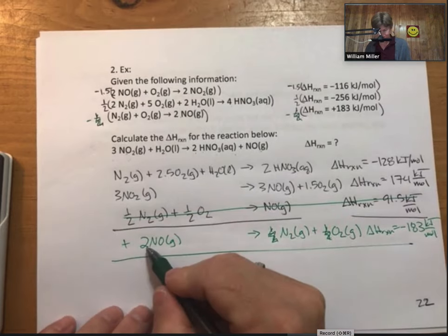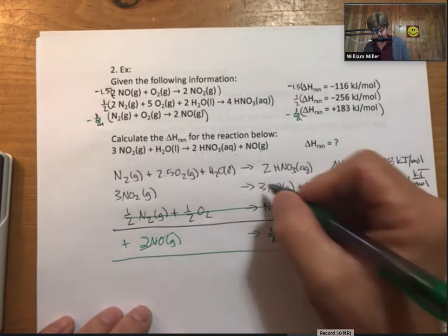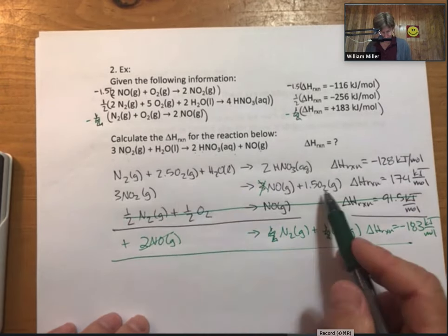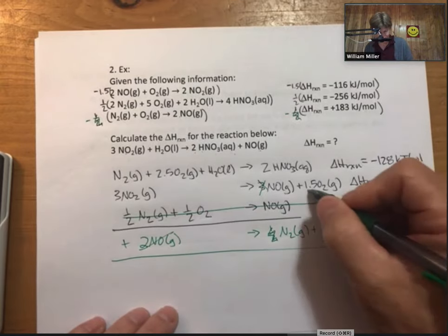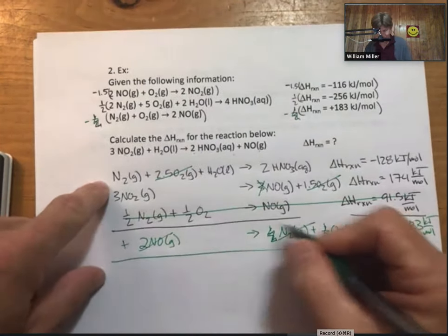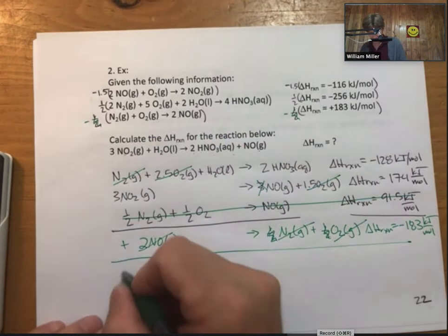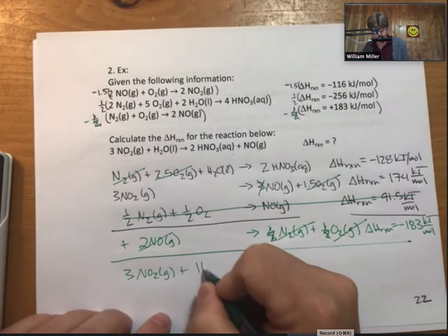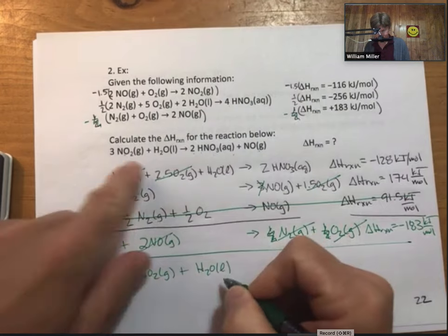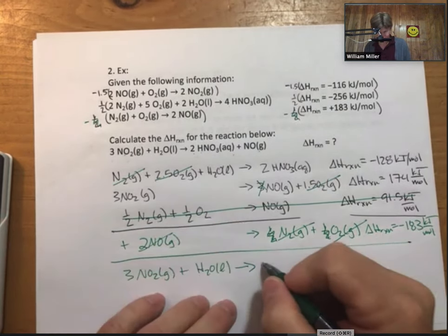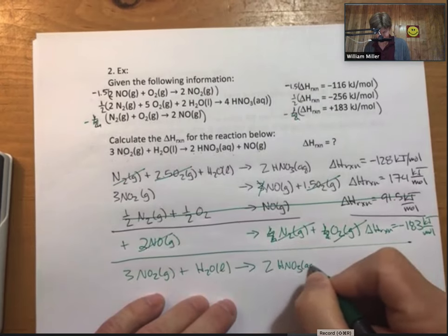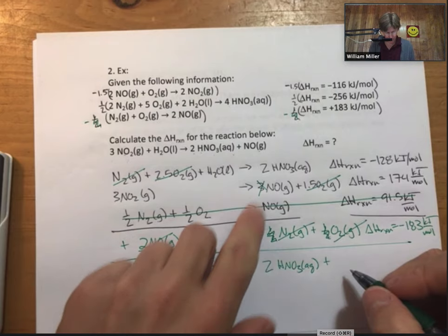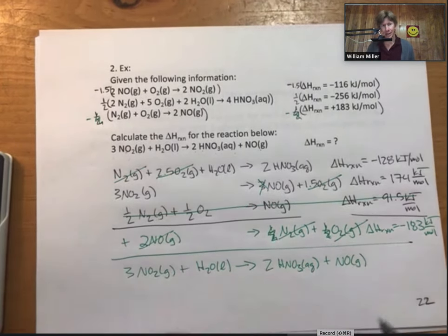Now I have two on this side and three on that side. Good. I have three. Good. I have 2.5 O2s, 1.5 plus one. I have an N2 and an N2. Now all I'm left with is 3 NO2s plus H2O. All right. Goes to two nitric acid plus, is there an NO in here somewhere? One NO.